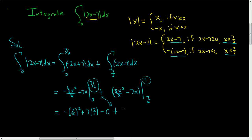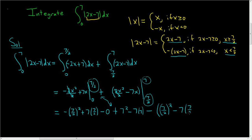Plugging in 7: we get 7 squared minus 7 times 7. Then minus, in parentheses, plugging in 7/2: (7/2) squared minus 7 times (7/2). Pretty messy — let's hope this cleans up nicely. I haven't done this problem yet.